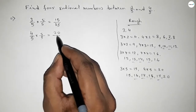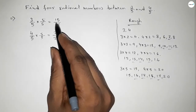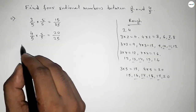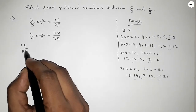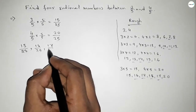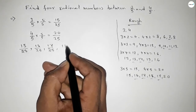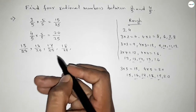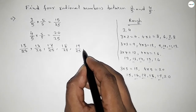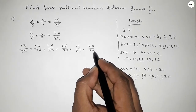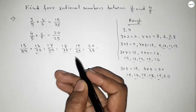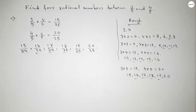So we get 15 over 25 and 20 over 25. Now between 15 and 20 we get 4 rational numbers. All the rational numbers are: 15 over 25, 16 over 25, 17 over 25, 18 over 25, 19 over 25, and 20 over 25.